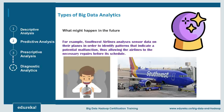Predictive analytics uses statistical models and forecasting techniques to understand the future and answer 'what could happen.' Through sensors and machine-generated data, companies can identify when a malfunction is likely to occur and preemptively order parts to avoid downtime and losses. Southwest Airlines analyzes sensor data on its planes to identify potential malfunctions or safety issues, allowing the airline to address problems and make repairs without interrupting flights or putting passengers in danger.